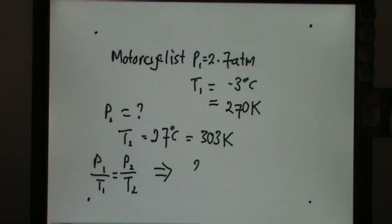P1 is 2.7 over T1 is 270, and then you have P2 unknown, and then you have T2 303.